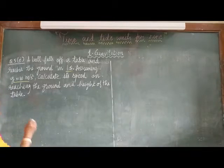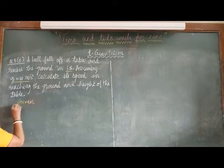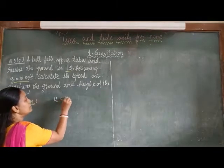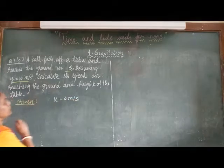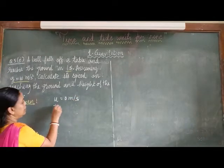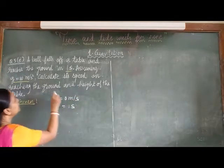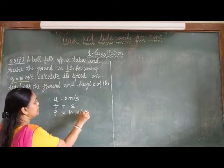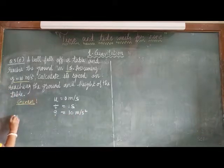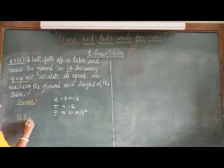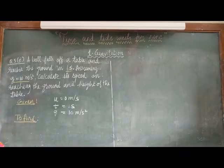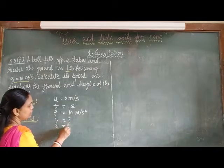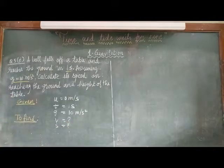So, first of all we will write what is given. Given is u equals to 0 meter per second. The time is given, time equals to 1 second. G is given as 10 meter per second squared. We have to find the speed, that is v is question mark, s is question mark. Now, solution.